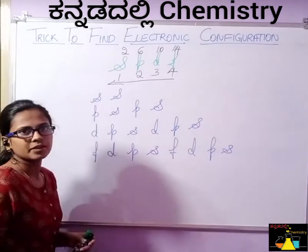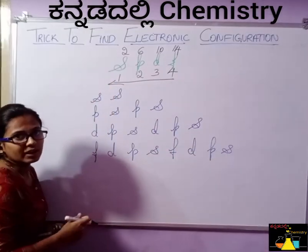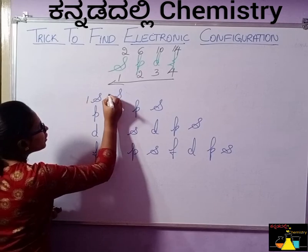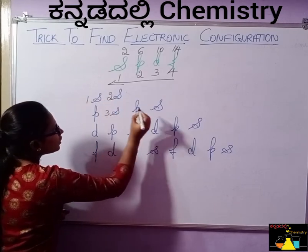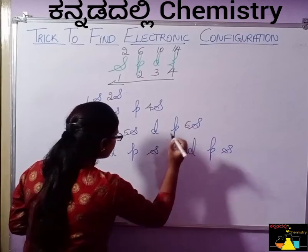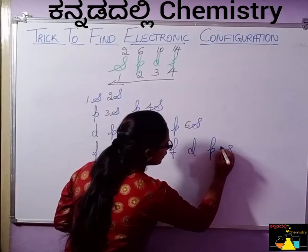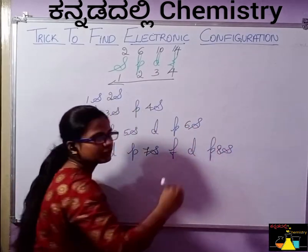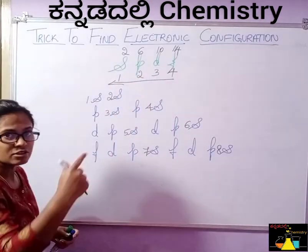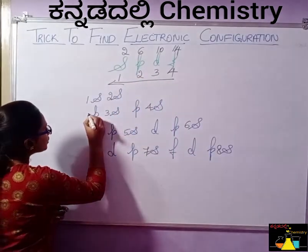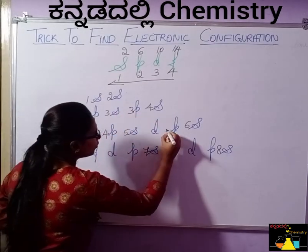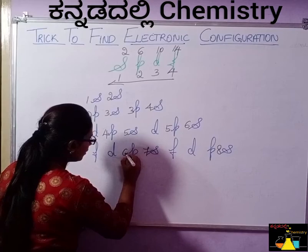S is equal to A, S is equal to A. So 1 is equal to 1. Number 1, 2, 3, 4, 5, 6, 7, 8. Next, P is equal to A, S is equal to A, S is equal to A. So second in the number: 1 is equal to A, 2, 3, 4, 5, 6, 7.